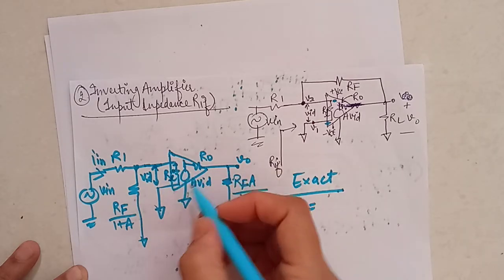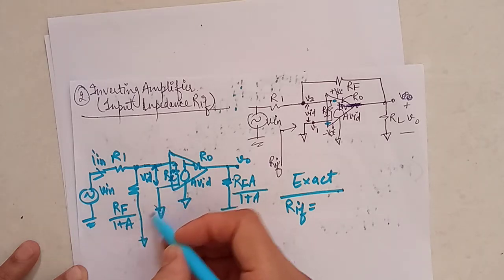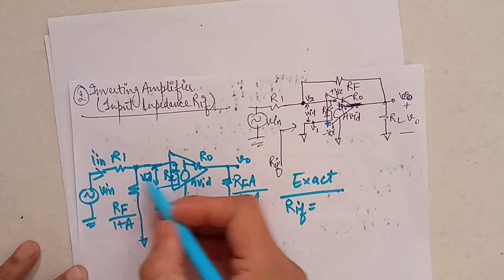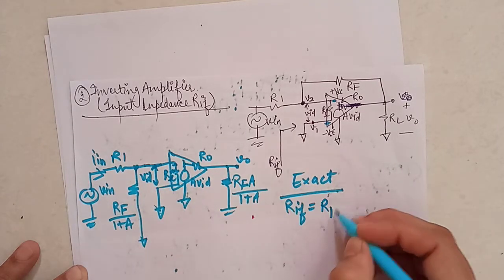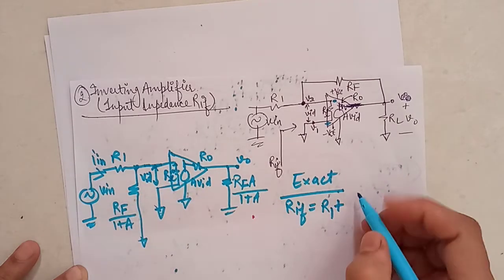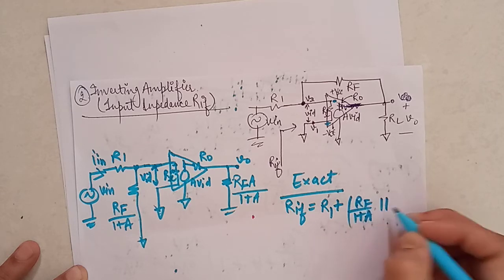Why? Because RI, this end is grounded, this is also grounded, so I can connect this together. This end of RF over 1 plus a is connected to RI, so obviously these two are in parallel. So I can write R1 in series with the parallel combination of RI and RF over 1 plus a. So this is the value of RIF exact value.